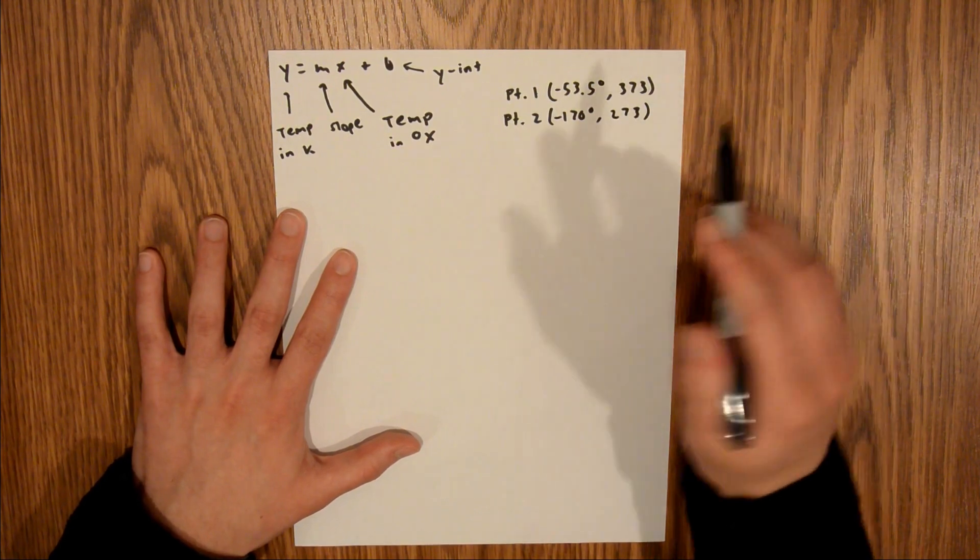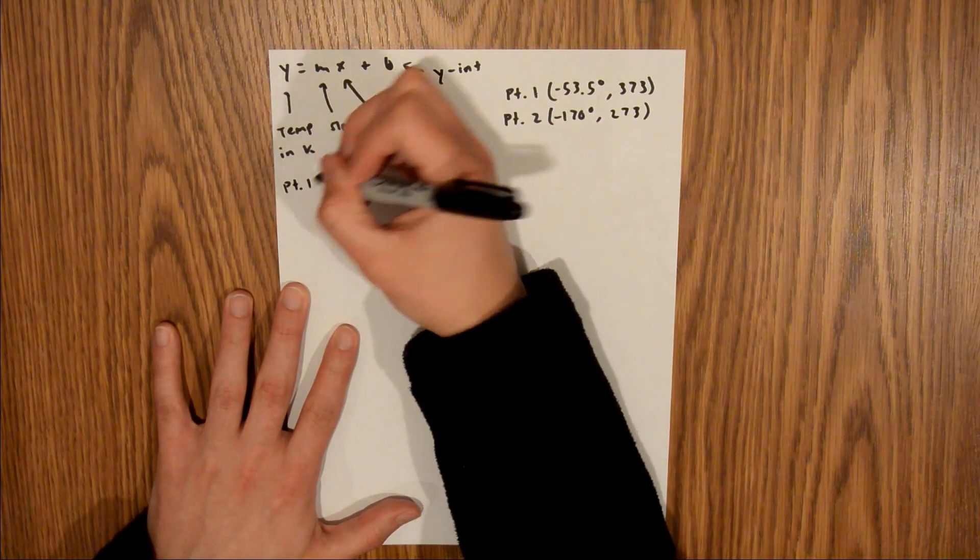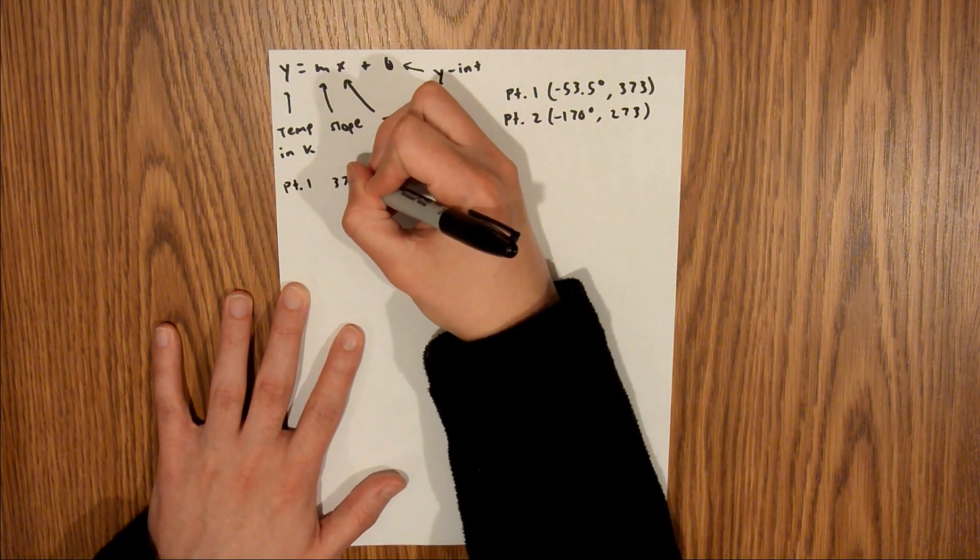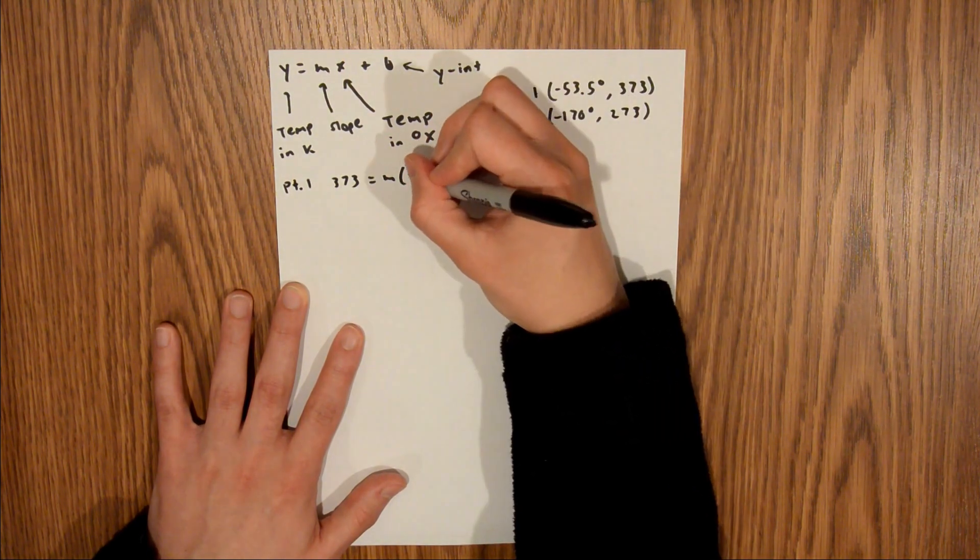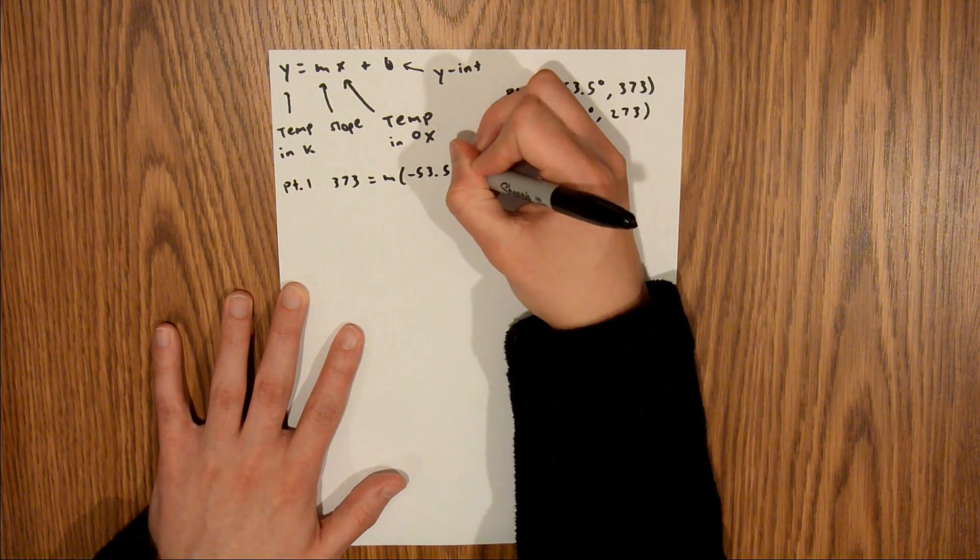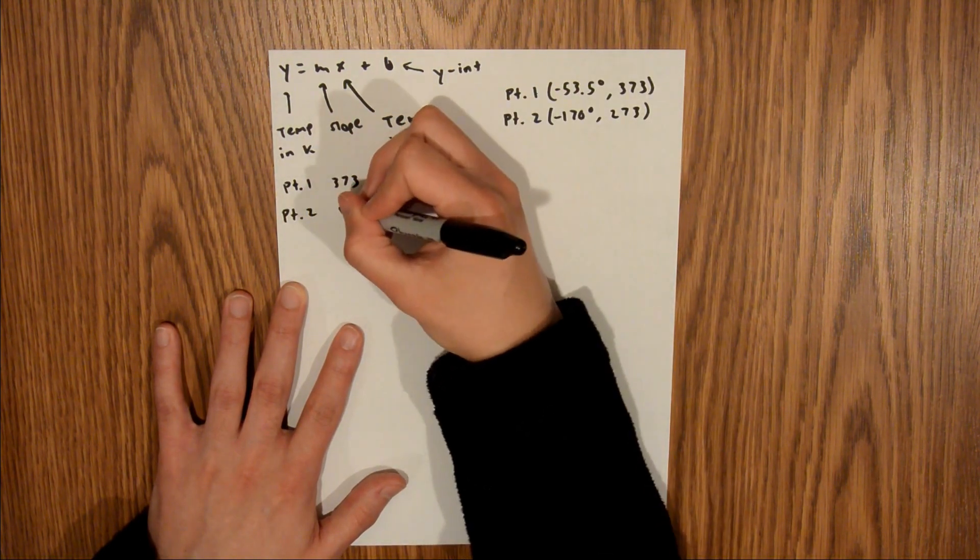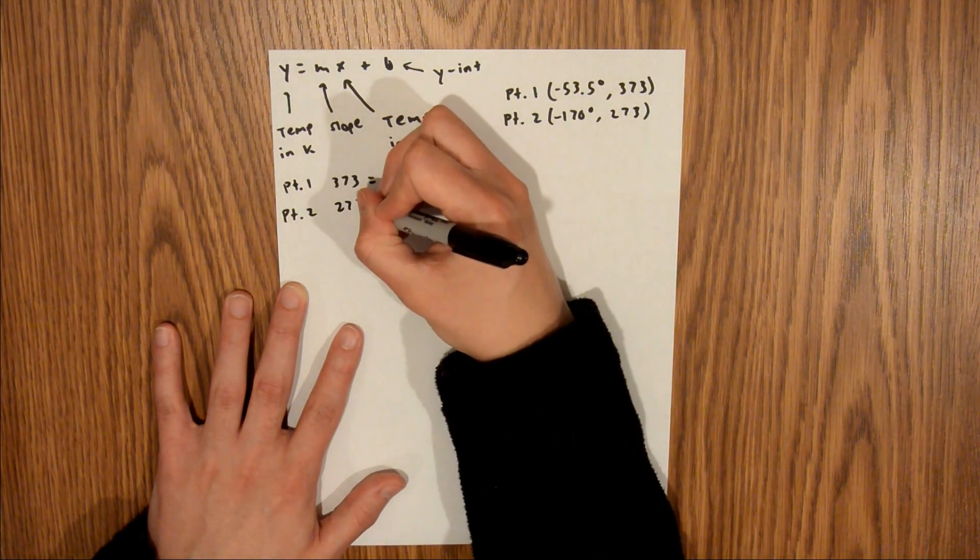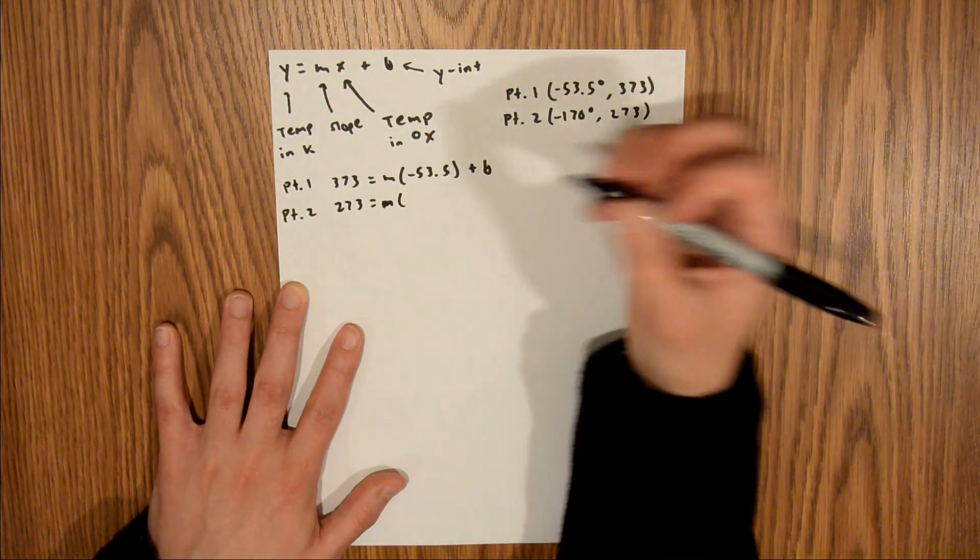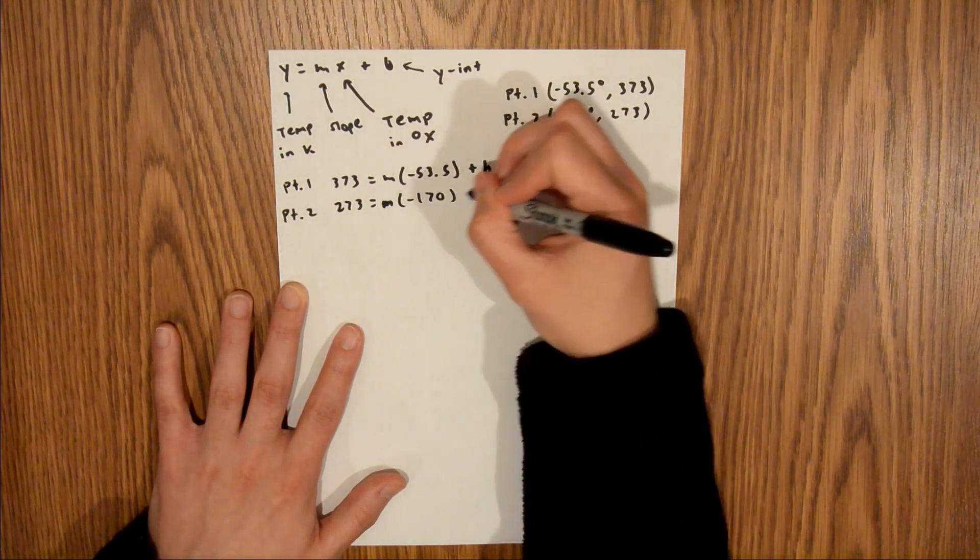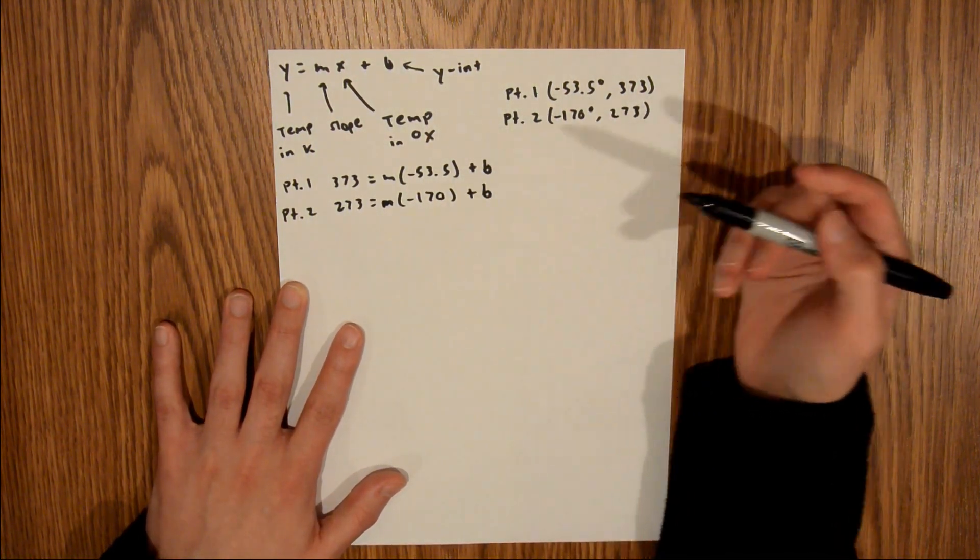And now what we can do is we can plug those into our generic form. So, starting with point 1, we will have 373 is equal to m times negative 53.5 plus b. And using point 2, we will have 273 is equal to m times negative 170 plus b. And now, if we look at this, we have two equations, and we have two unknowns.